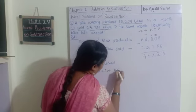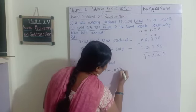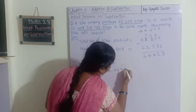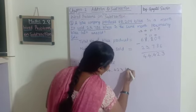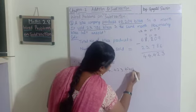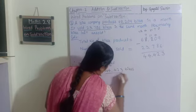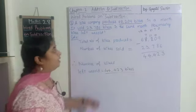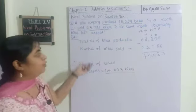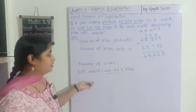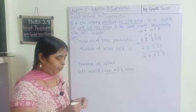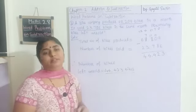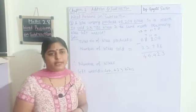Forty-four thousand four hundred and twenty-three — this is the number of unsold bikes the company still has. Like this we go on solving word problems on subtraction.